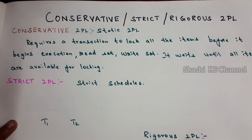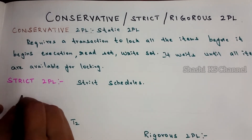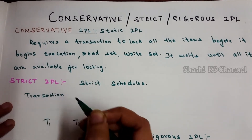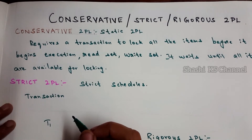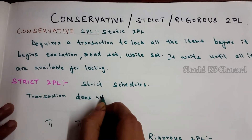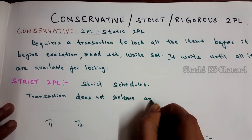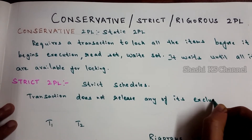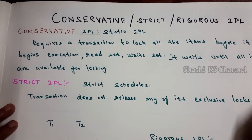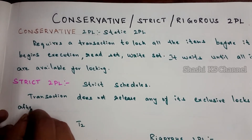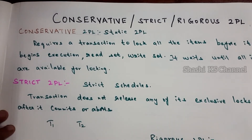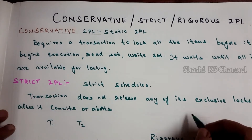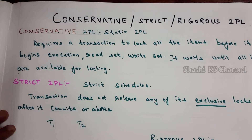In strict two-phase locking protocol, the transaction does not release any of its exclusive locks until after it commits or aborts. Note that exclusive locks are also called as write locks. So the transaction will not be releasing any of its exclusive locks — either it has to get committed or it has to get aborted — until such time. That is called as strict two-phase locking protocol.